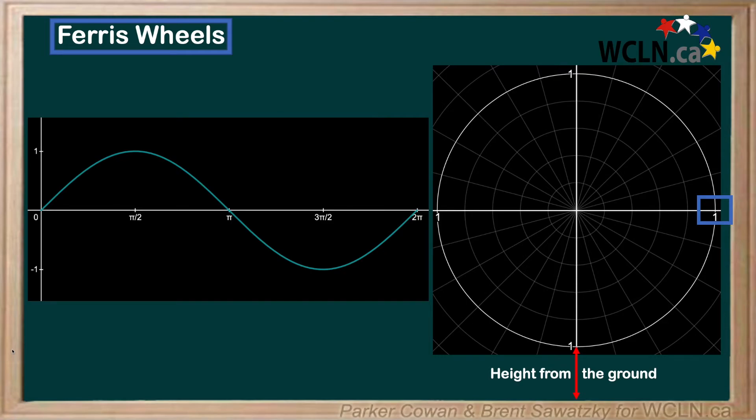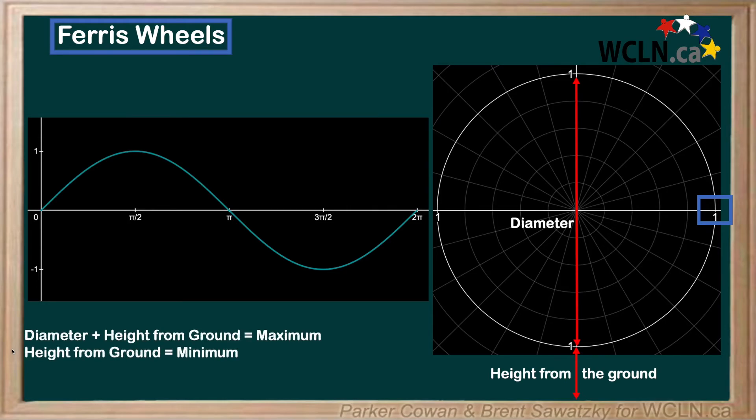Next we need to consider the radius or diameter of the ferris wheel. Adding the diameter to the height from the ground gives us our total distance to the maximum point, which is useful for the sine curve. The minimum point will then just be our distance from the bottom of the ferris wheel to the ground.